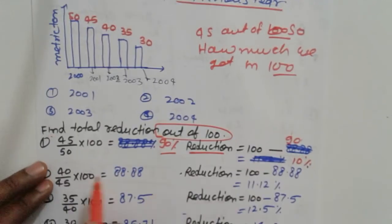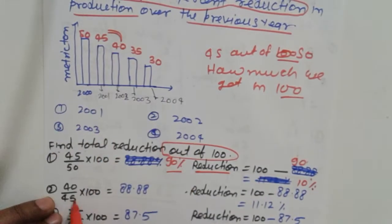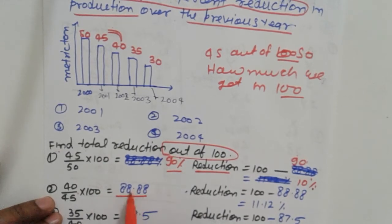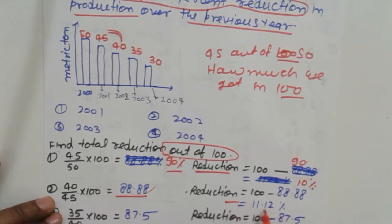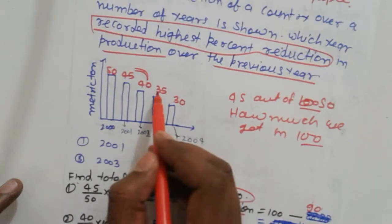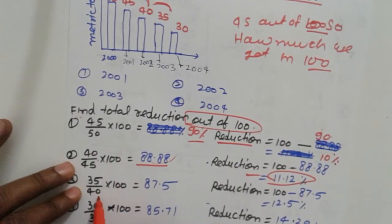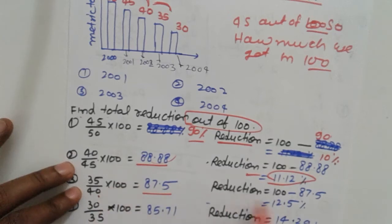Similarly, 40 divided by 45 into 100 gives 88.88, so reduction is 11.12 percent. Then 35 divided by 40 into 100 gives 87.5, so reduction is 12.5 percent.